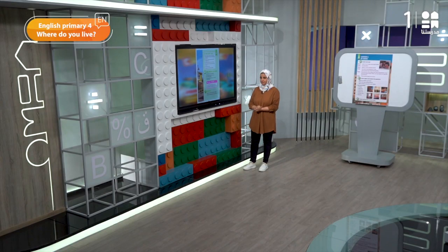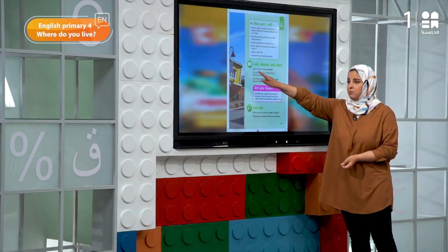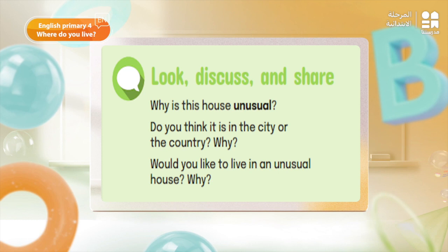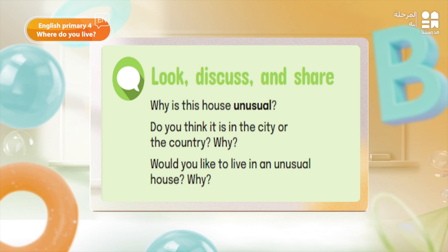Very good, my dear boys and girls. Now let's move to the other page, page 71. Let's read the questions together first. لما يكون عندي speech bubble دي معناها discussion — يعني الquestions دي مش هنجاوب عليها بالكتابة، هنجاوب عليها as a group discussion or pair discussion. Question number one: why is this house unusual? Very good — the house is unusual because of its shape, because it's upside down. Do you think it is in the city or the country, and why? Why do you like or would you like to live in an unusual house, and why?